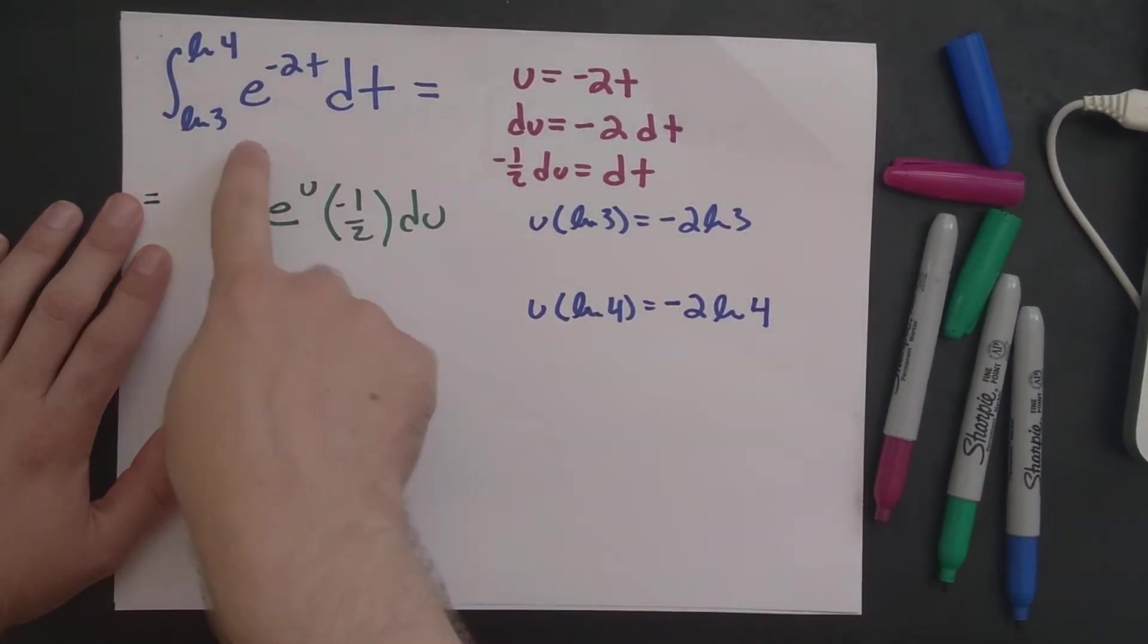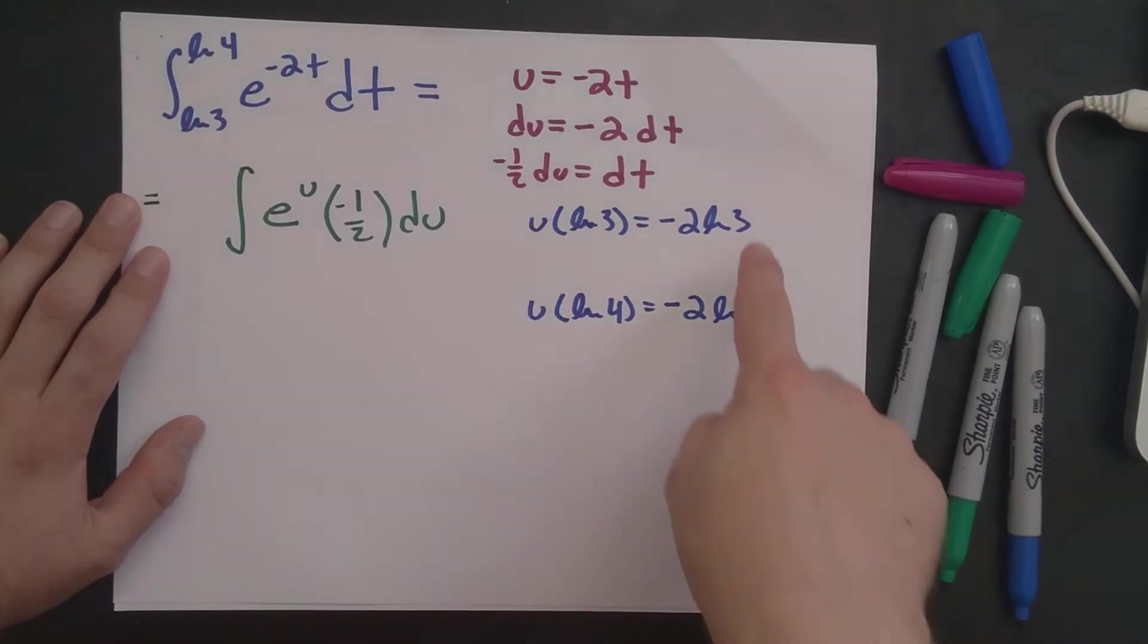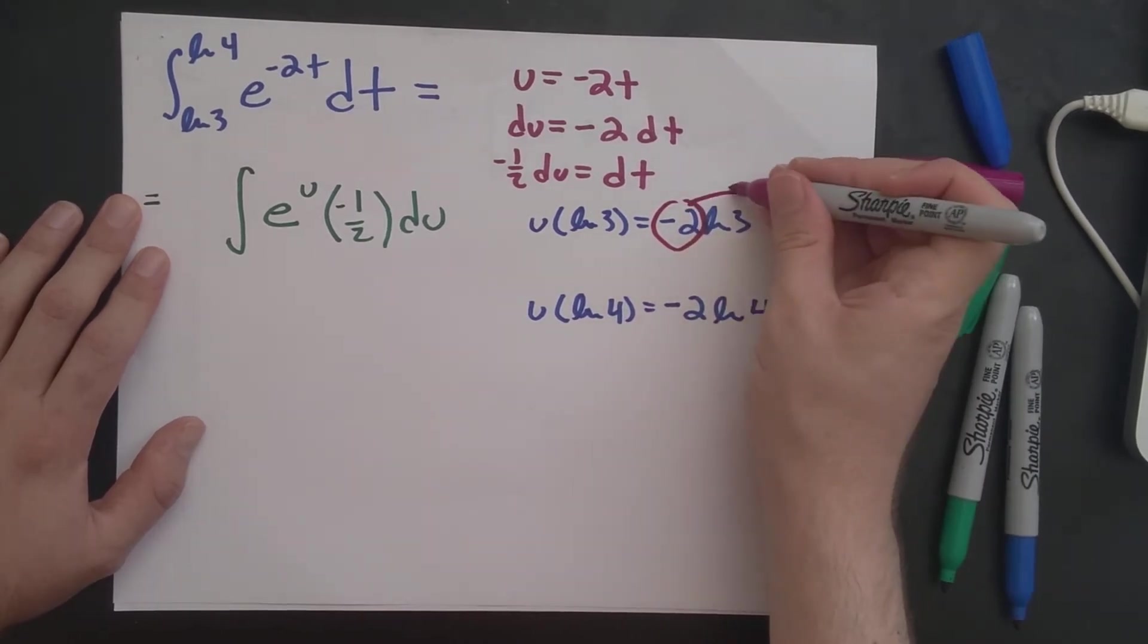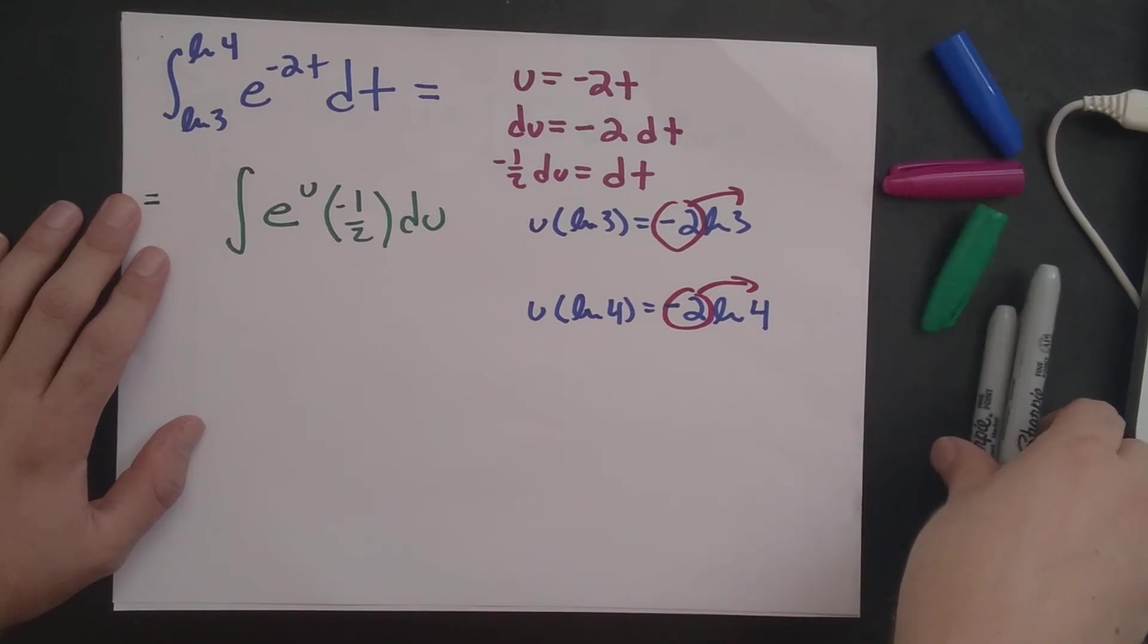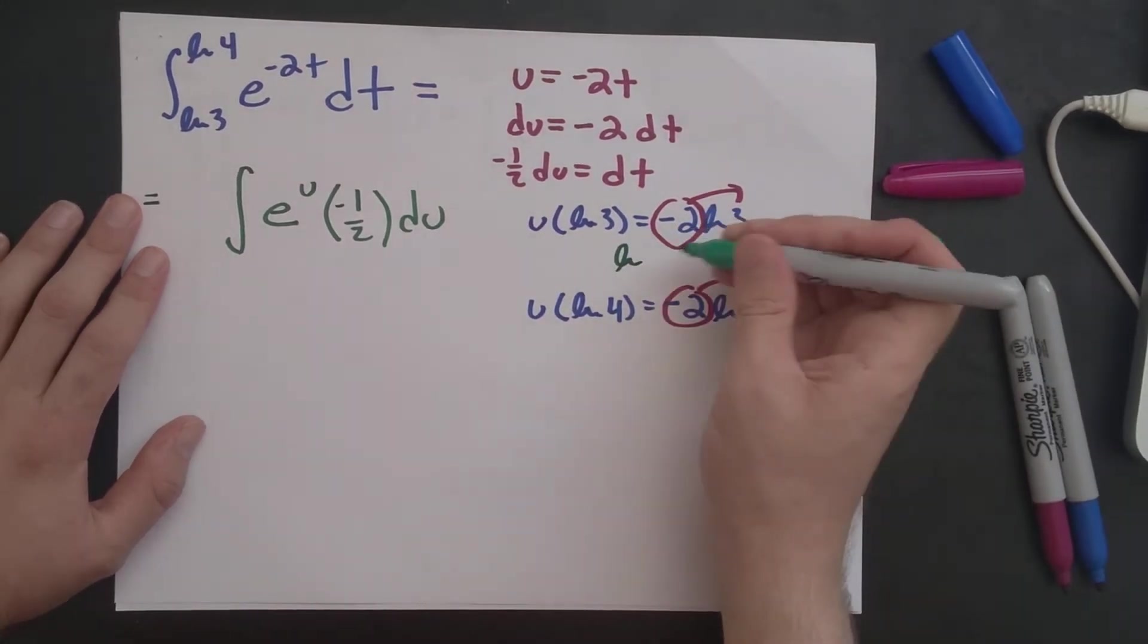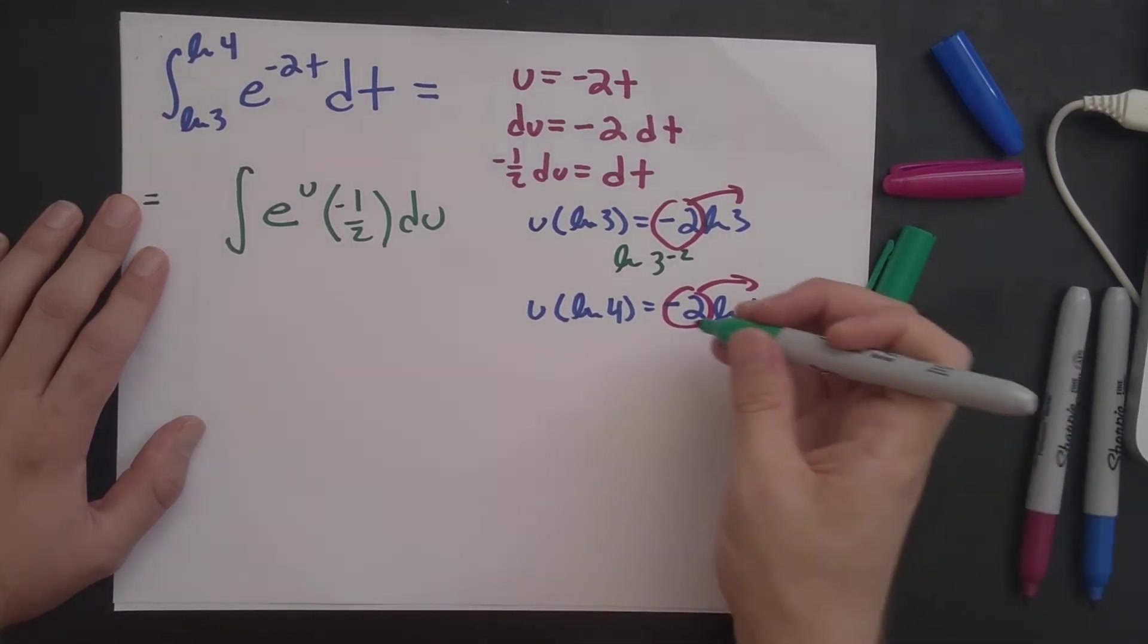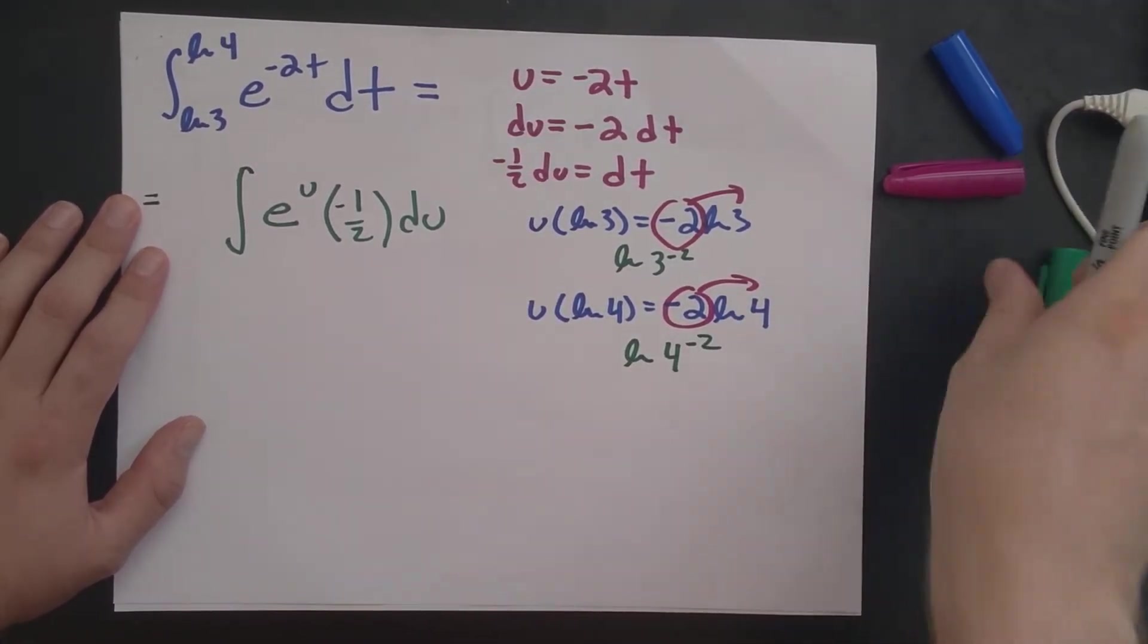So before I plop those in over here, I want to do just a little bit of manipulation here, because I can bring these exponents up. And so this becomes log of 3 raised to the minus 2 power, and this is log of 4 raised to the minus 2 power.